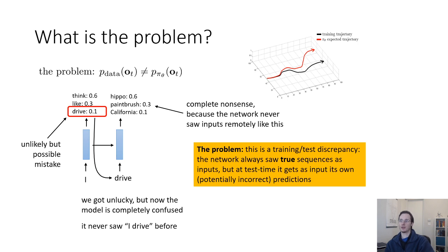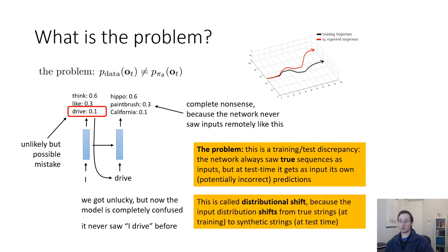The problem with RNNs was a training-test discrepancy: the network always saw true sequences as inputs at training time, but at test time it gets its own potentially incorrect predictions. The case in behavior cloning is very similar. During training, the network only saw observations from the expert's observation distribution, but at test time it starts seeing observations that are the consequence of its own perhaps slightly incorrect actions. The input distribution shifts — this is distributional shift.